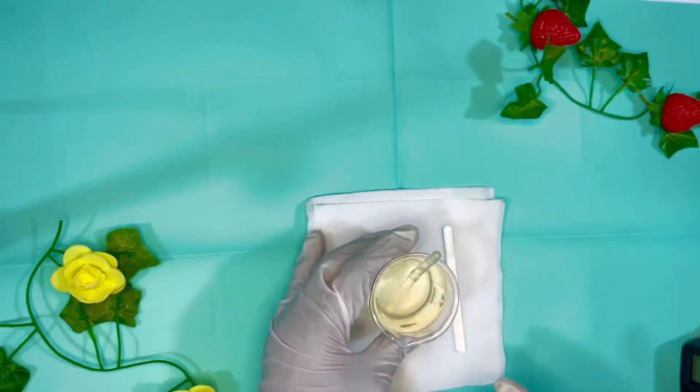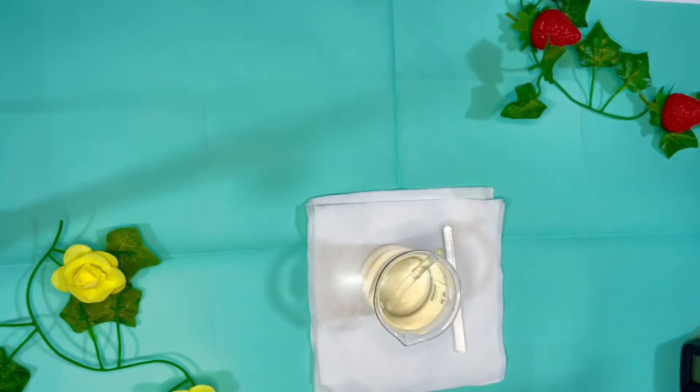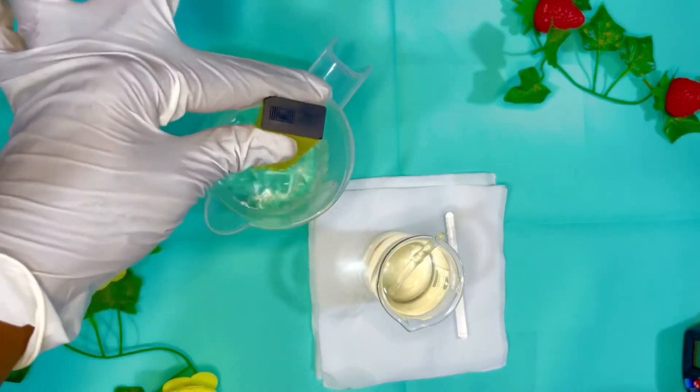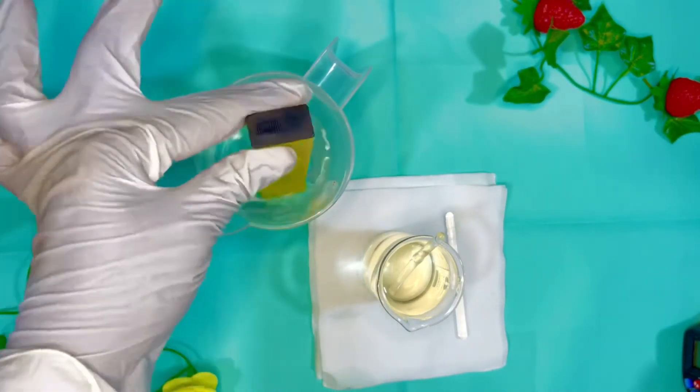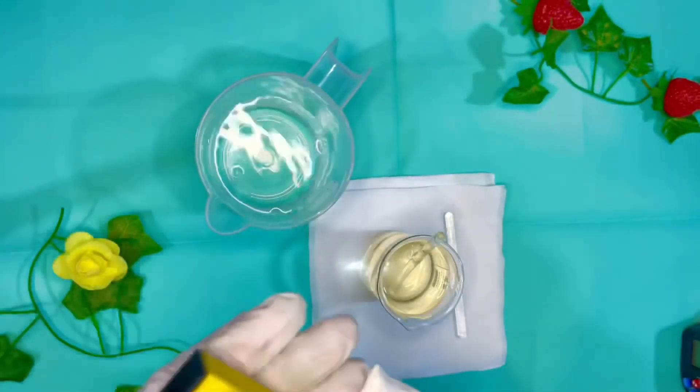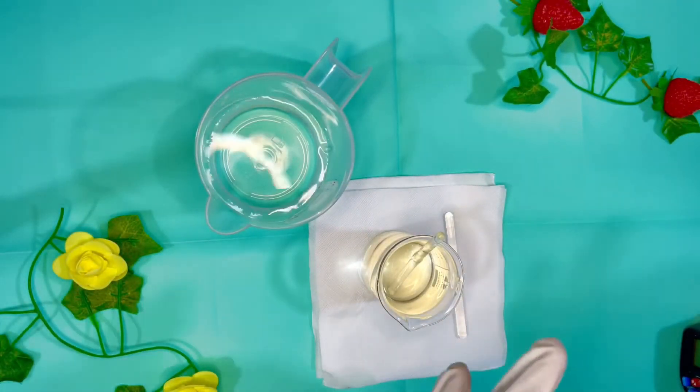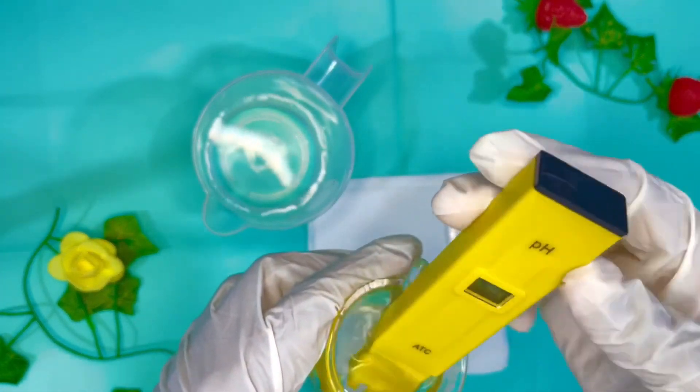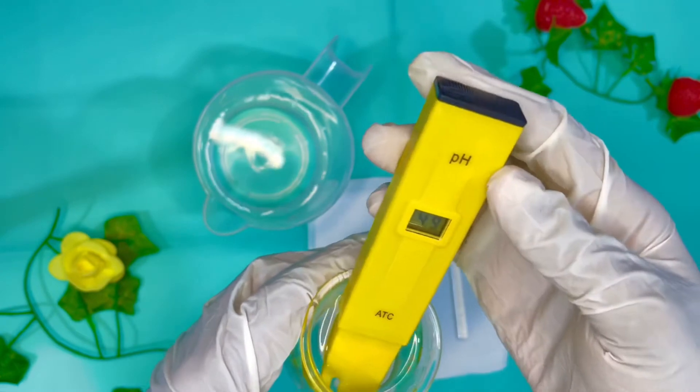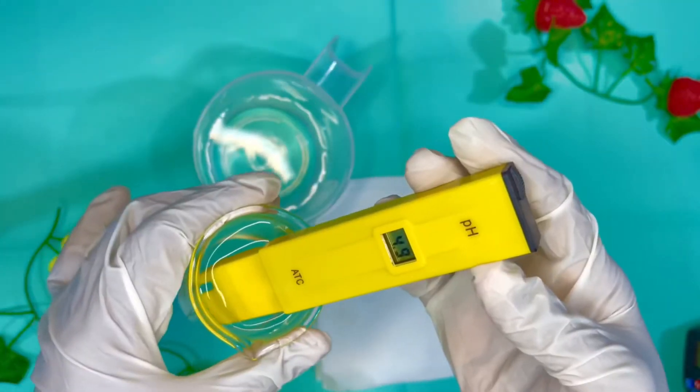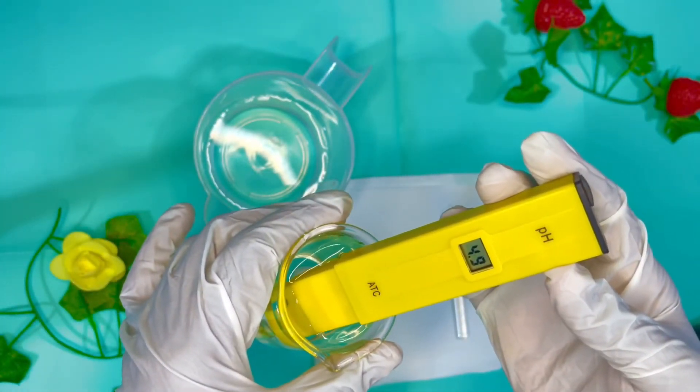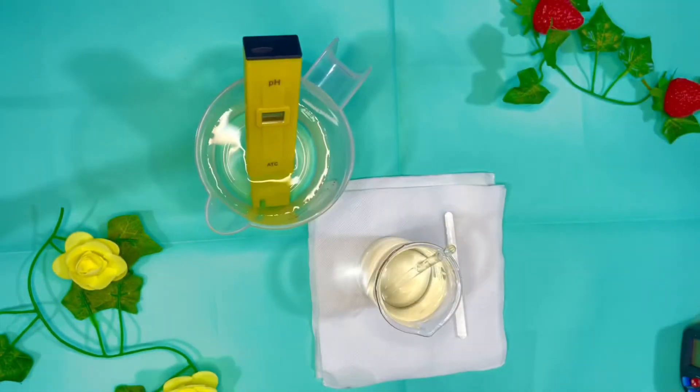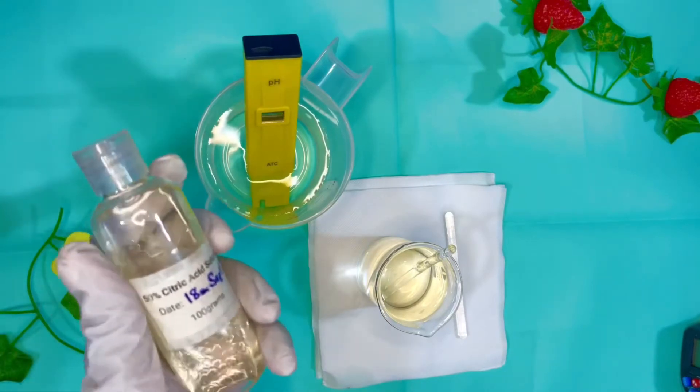So we are done with our 3% glycolic acid face toner. And if you don't understand anything, you can check the description for more information. And we're gonna check the pH now. I did rinse my pH meter with distilled water. And you know glycolic acid does work around pH of 3.8.